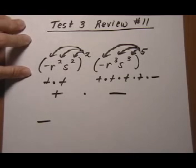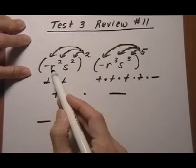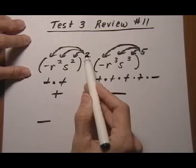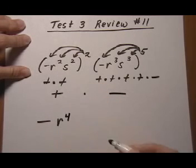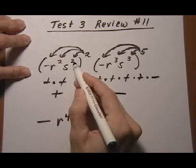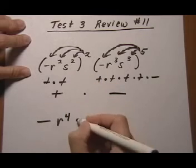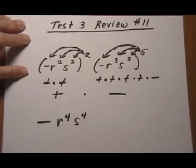And now we can just look at the variables. So let's start with the r squared in the first parentheses. r squared raised to the second power, power to power, multiply the exponents. Same with the s, s squared, squared again, multiply the exponents, and we get s to the fourth.